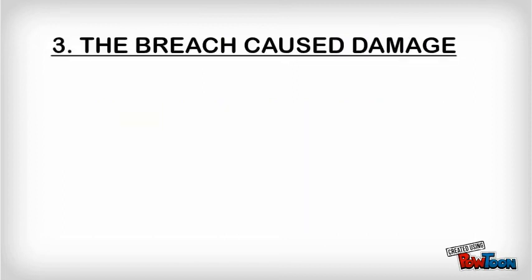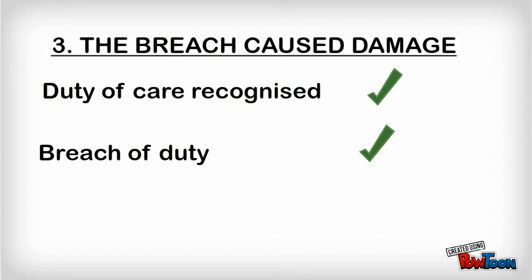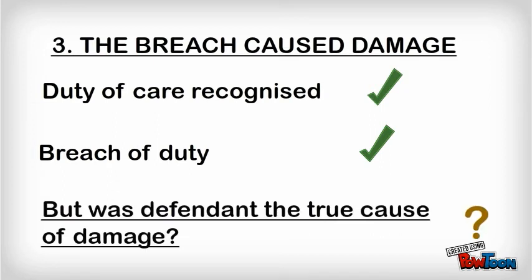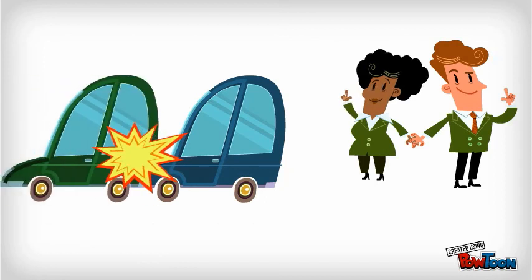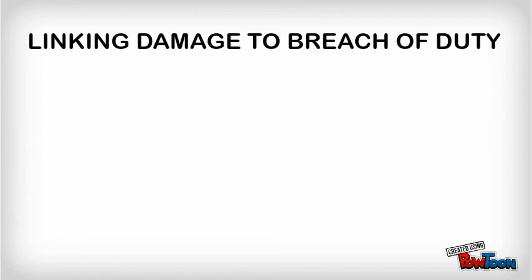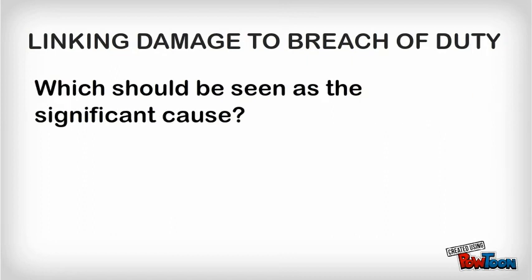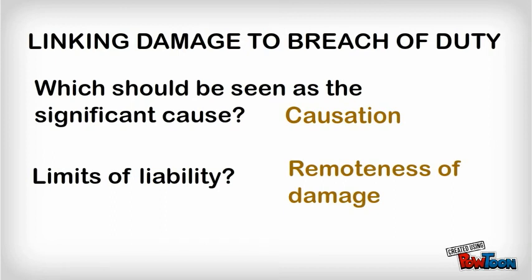Thirdly, damage. If a claimant has established the existence of a duty of care and a breach of that duty has been shown, the claimant also needs to prove that the defendant was the cause of the damage suffered. In road traffic accidents it might be straightforward to find witnesses identifying the defendant's vehicle. In other kinds of cases, though, the task of linking damage to breach of duty can be less clear cut. In deciding if a defendant should be liable, the courts may face one of two questions: if there are a number of possible causes of damage, which should be treated as the significant one — this is the issue of causation. Secondly, what are the limits of the defendant's liability — this is the issue of remoteness of damage.